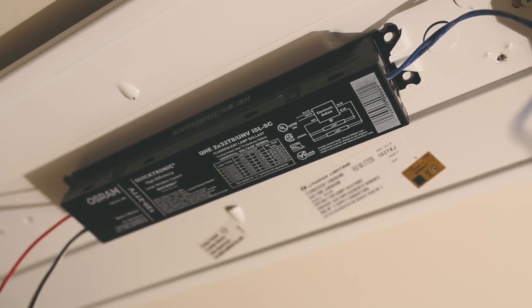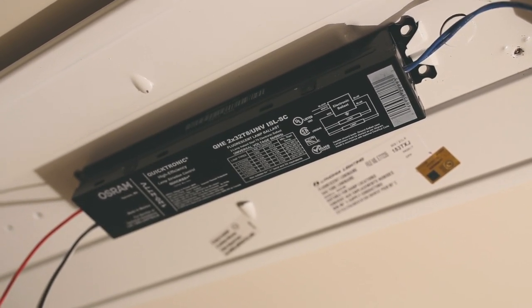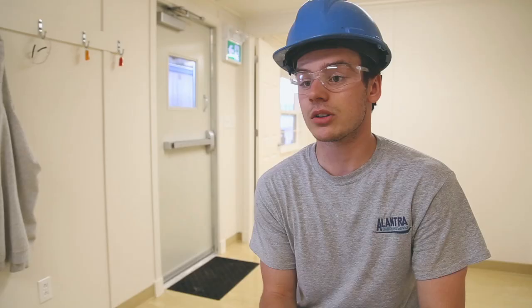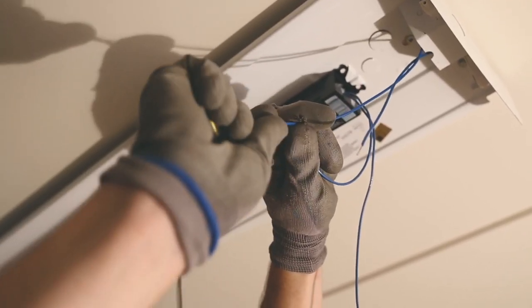You can look at the wiring diagram on the ballast if you'd like. That can show you how it hooks up just the same but all the wires are color-coded.